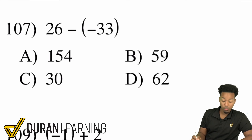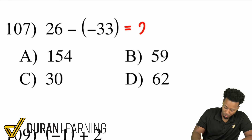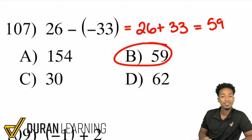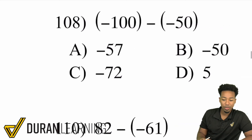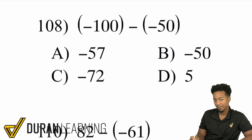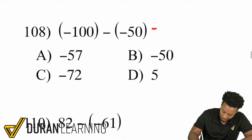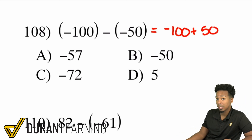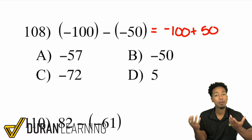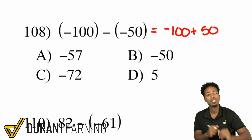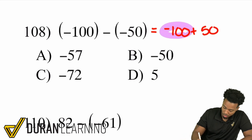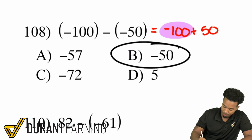Two more to go. 26 minus negative 33: subtracting a negative is adding, so 26 plus 33 equals 59. Then problem 108: negative 100 minus negative 50. Subtracting a negative means addition, so this becomes negative 100 plus 50. A negative plus a positive — take the difference and keep the sign of the bigger number. 100 minus 50 is 50, and 100 was the bigger number, so the answer is negative 50.